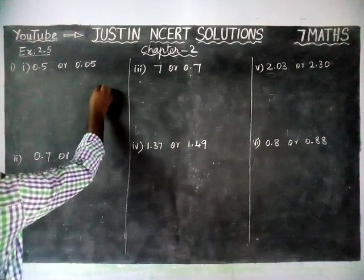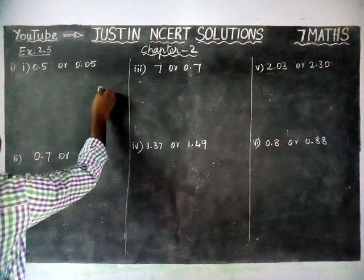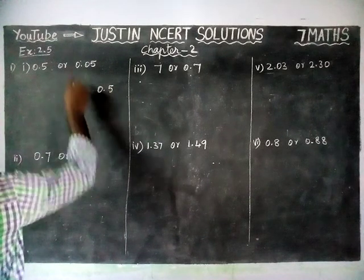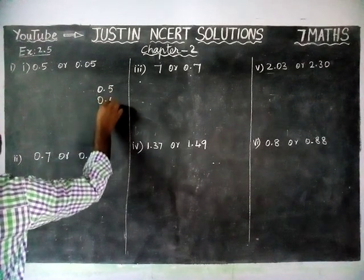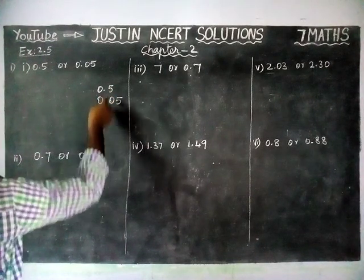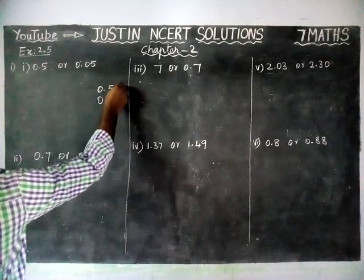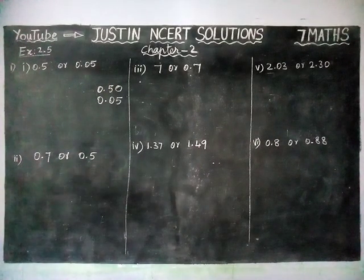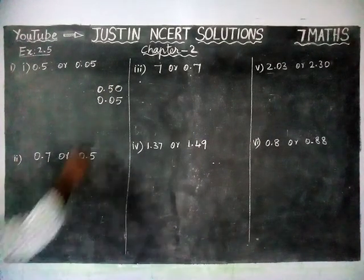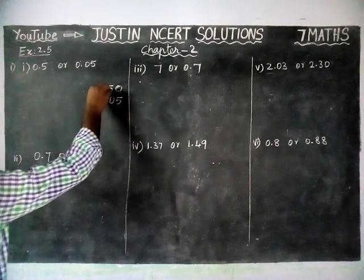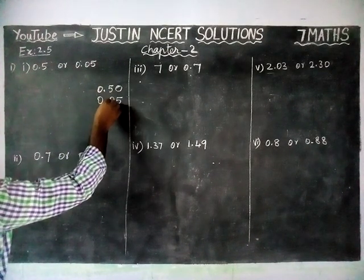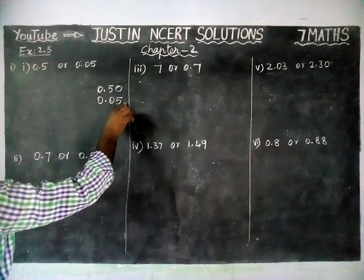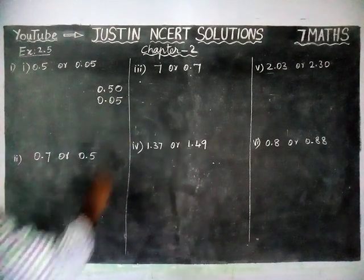We will write it in order: 0.5 and 0.05. When we are comparing decimal numbers, we have to see the first digit, then second digit, then third digit — like that only we can compare.